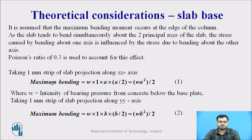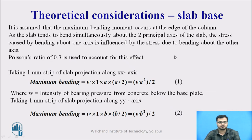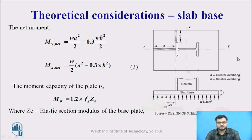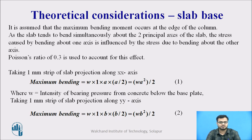To calculate the bending moment, we take a 1 mm strip of the slab projection along the XX axis. The moment is load multiplied by length — it is a UDL multiplied by L/2, giving WA²/2. Along the YY axis, the maximum bending moment is W into B acting at a distance of B/2, which equals WB²/2.